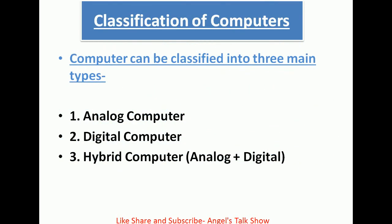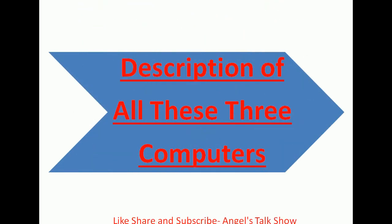Classification of computers. Computers can be classified into three main types. First one is analog computer, second one is digital computer, and the third one is hybrid computer, which is the combination of analog and digital computer. Now we will take one by one all these three computers.